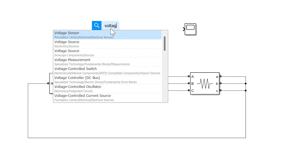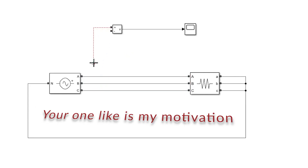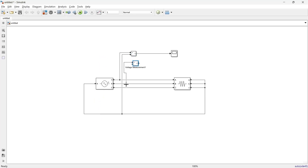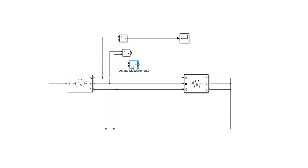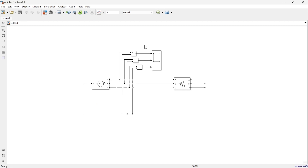Now we'll take a voltage measurement block. We want to measure the phase voltage of these three lines. We'll connect the positive to the line and the negative to neutral — that's how we measure phase voltage. We'll do the same for the other lines. The circuit is complete: this is the supply side, this is the load side, this is the neutral. Using the three voltage measurement units and the scope, we'll observe the waveform.